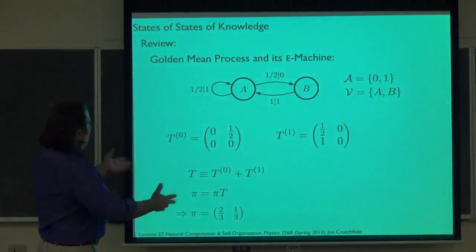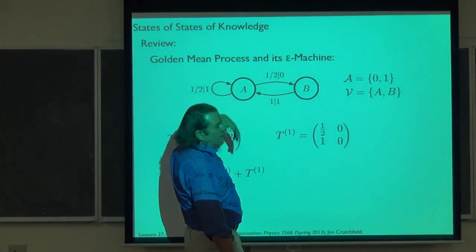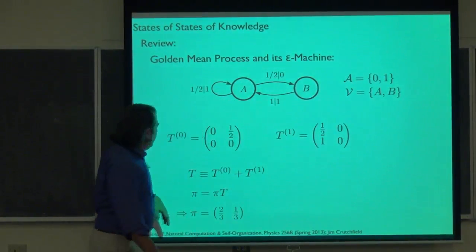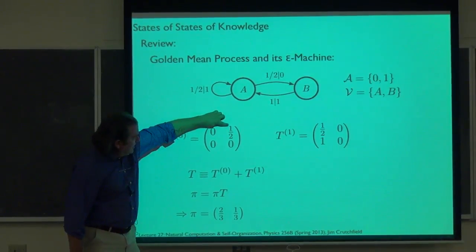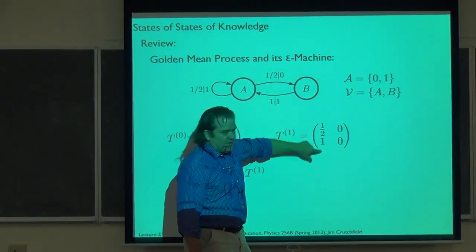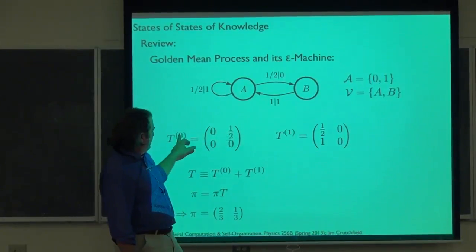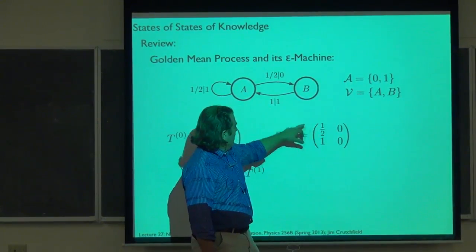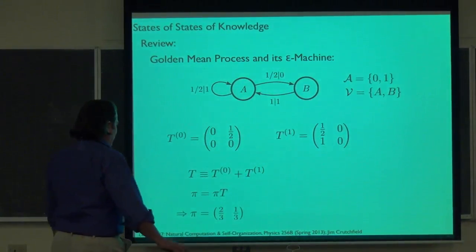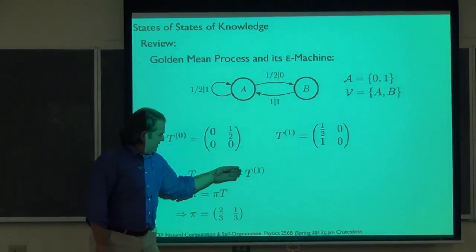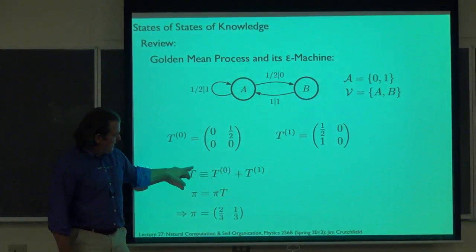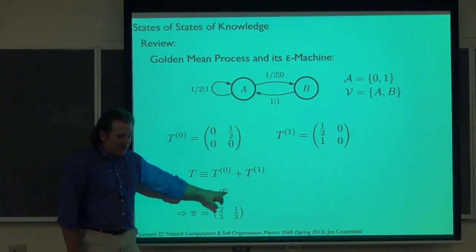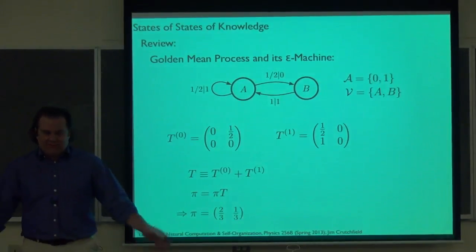Review: the golden mean process — no consecutive zeros; if you see a one, the next symbol is a fair coin flip, zero or one. This epsilon machine has two states, binary alphabet. We have our matrix that gives transitions on zero symbols and the matrix for one symbols. If we're interested in the internal state process, we sum over the symbol-labeled transition matrices component-wise to get the internal Markov chain transition matrix. Solving the eigenvalue equation and normalizing pi gives us the asymptotic state probabilities.